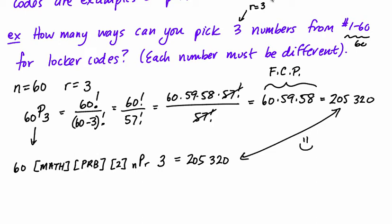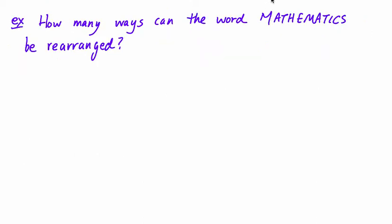Now things change a little bit if some of the objects are the same. For instance, if you've got the letters of a word, and you want to mix up all the letters, but some of the letters are the same, there's some extra information that we have to take into account now. So let's take a look at an example. For instance, how many ways can the word mathematics be rearranged? Now if you count these, there's 4, 6, 8, 10, there's 11 letters.